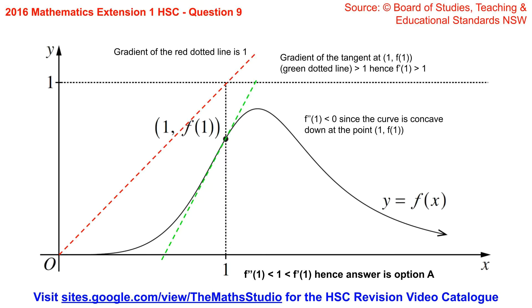The gradient of the red dotted line is 1 since it joins the origin to the point (1,1). That's going to serve as a reference line.